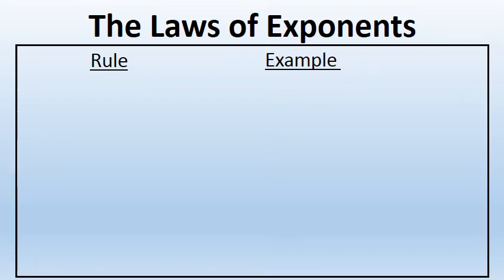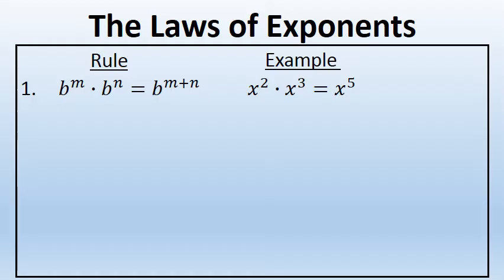Let's talk about six laws of exponents. First, the law for multiplying the same base when there are exponents involved. The rule is b to the m power times b to the n power equals b to the power of m plus n.